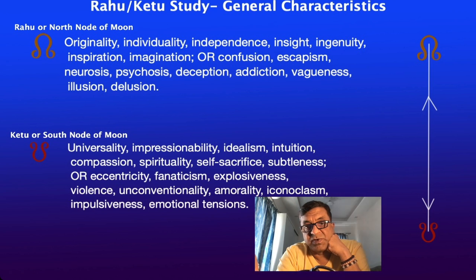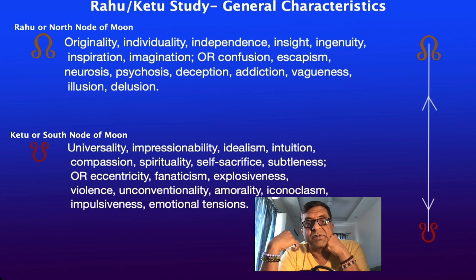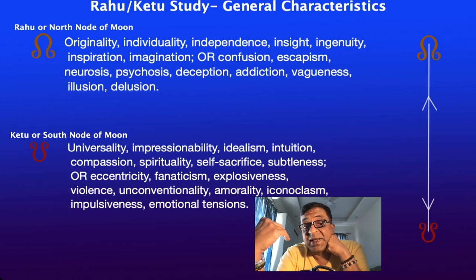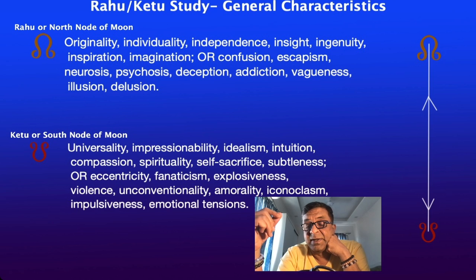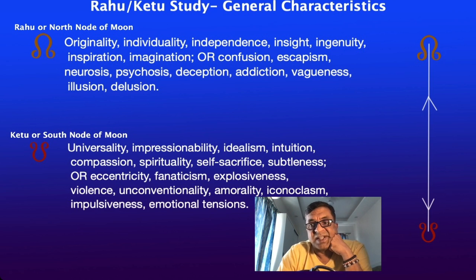Rahu and Ketu always stand opposite to each other. So if Rahu is in the second house, Ketu will be in the eighth house. You bring the eighth house aspect with Ketu's characteristics, and the second house with Rahu's. This plays out through what are called dispositors.